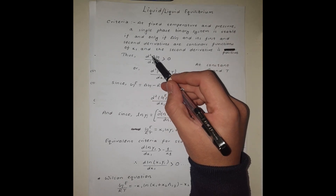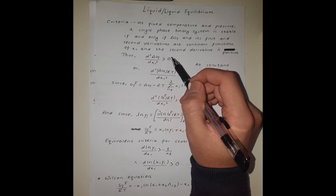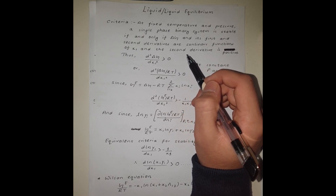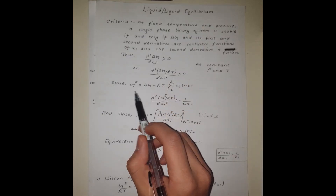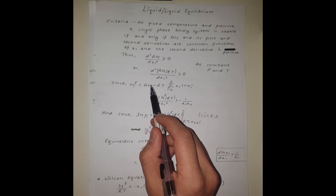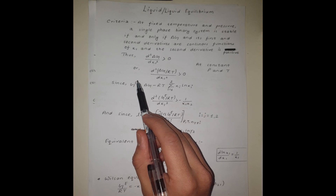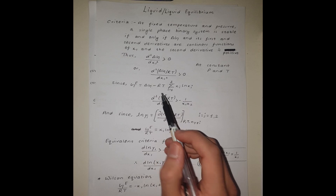If the second derivative is less than zero, we will have two phases, which could mean the system is either partially immiscible or completely immiscible. We also have an expression relating delta G, the Gibbs free energy of mixing, and G^E, the excess Gibbs free energy, which allows us to obtain another equivalent stability criterion.